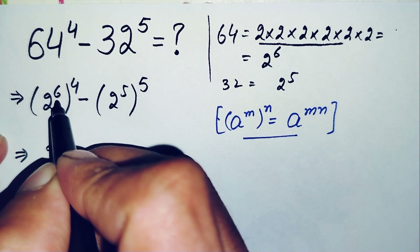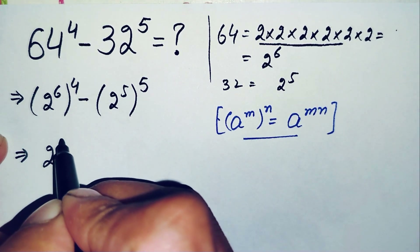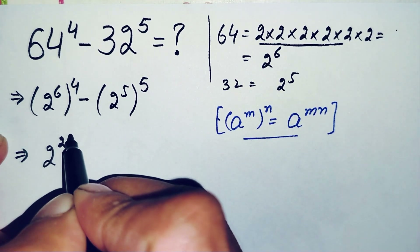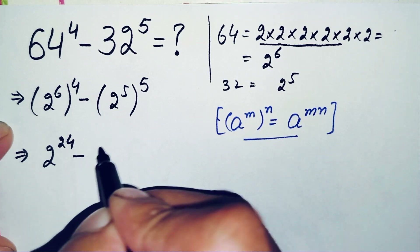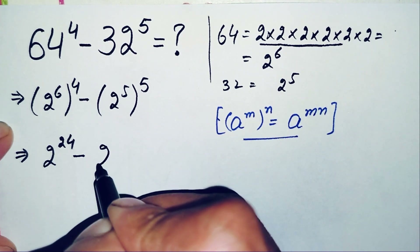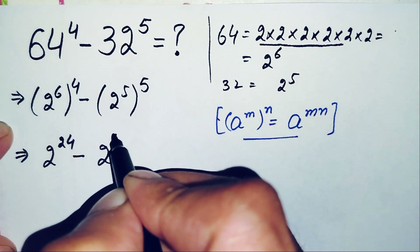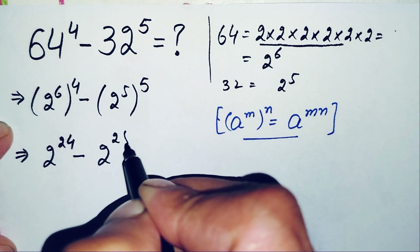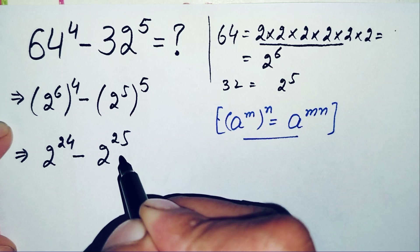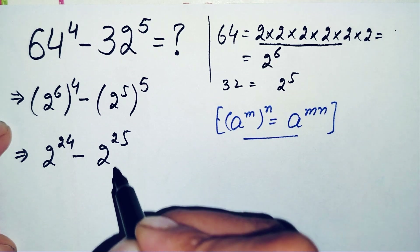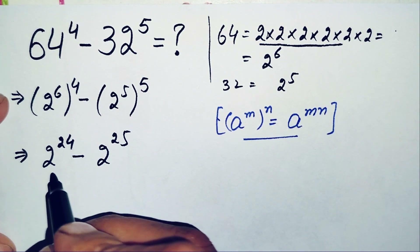Using this exponential property, we write the base 2 and multiply the powers. For the first term, 6 times 4 gives 24, so we get 2 raised to power 24. For the second term, 5 times 5 gives 25, so we get 2 raised to power 25. The expression is now 2 raised to power 24 minus 2 raised to power 25.